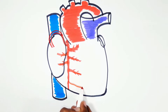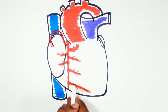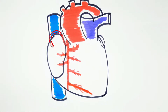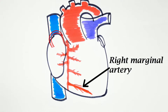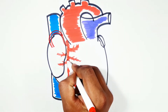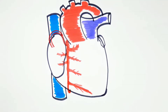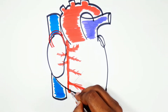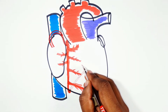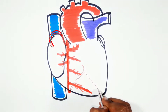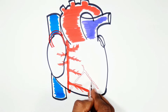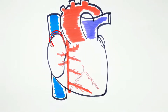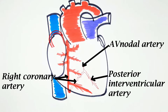The right marginal artery is a large branch, given at the sharp inferior border. It passes obliquely to the left along the inferior border over the front of the ventricle. Then the right coronary artery turns backwards at the inferior border of the heart and runs posteriorly on the diaphragmatic surface. It gives the AV nodal artery and runs as the posterior interventricular artery, also known as the posterior descending artery.